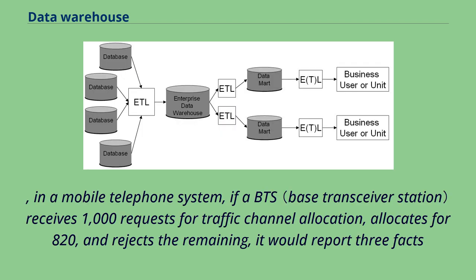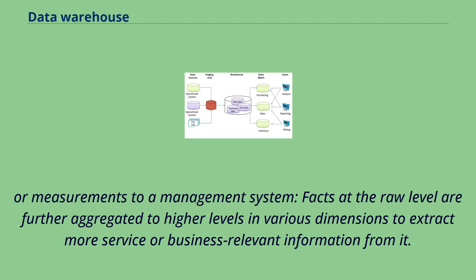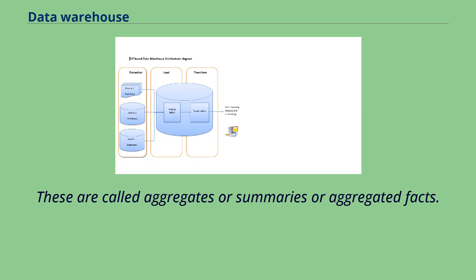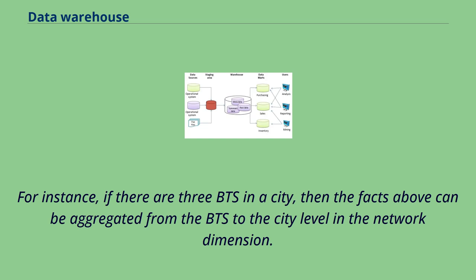For example, in a mobile telephone system, if a BTS receives 1000 requests for traffic channel allocation, allocates for 820, and rejects the remaining, it would report 3 facts or measurements to a management system. Facts at the raw level are further aggregated to higher levels in various dimensions to extract more service or business relevant information. These are called aggregates, summaries, or aggregated facts. For instance, if there are 3 BTS in a city, the facts can be aggregated from the BTS to the city level in the network dimension.